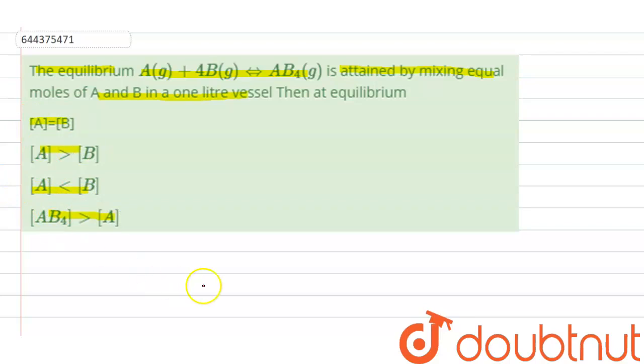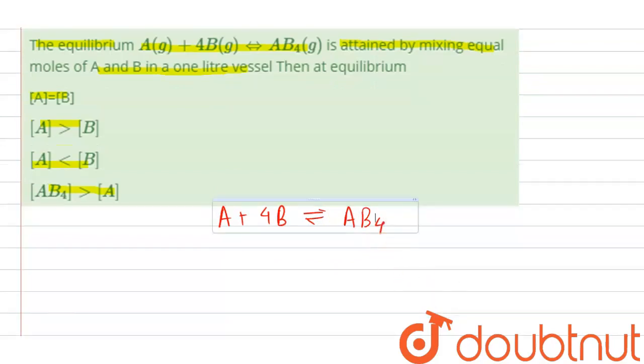Now for the given equilibrium, we have a relation that A + 4B equilibrium gives you AB4. Now in the given equilibrium, we have one mole of A and one mole of B initially. Initially we have both equal moles.